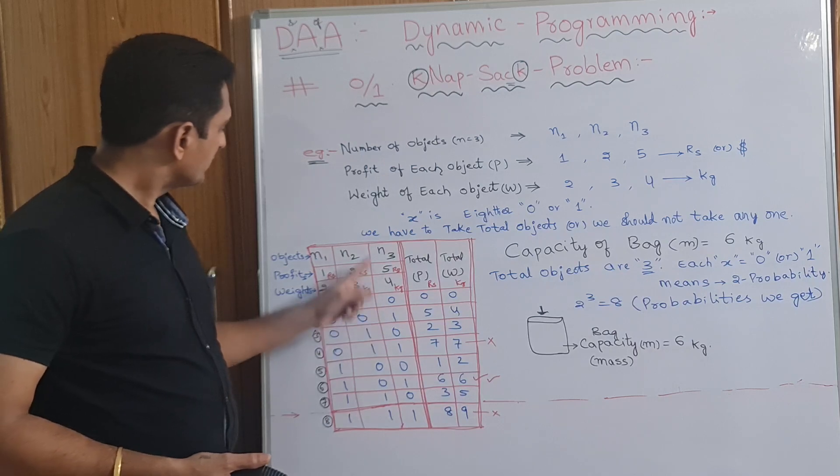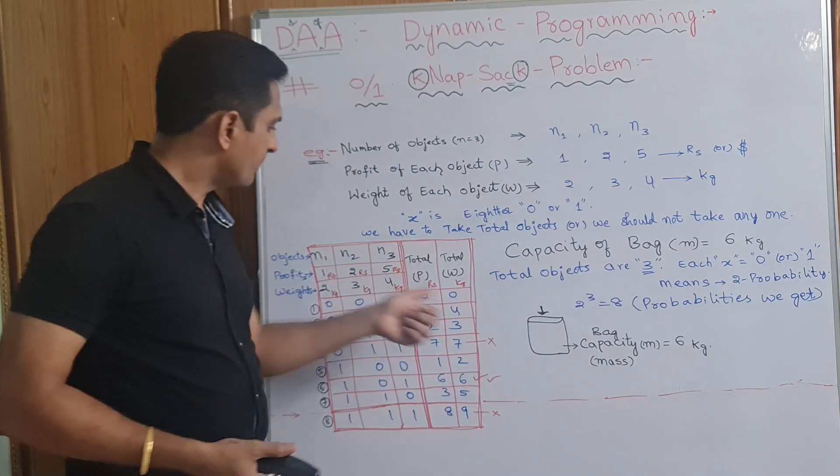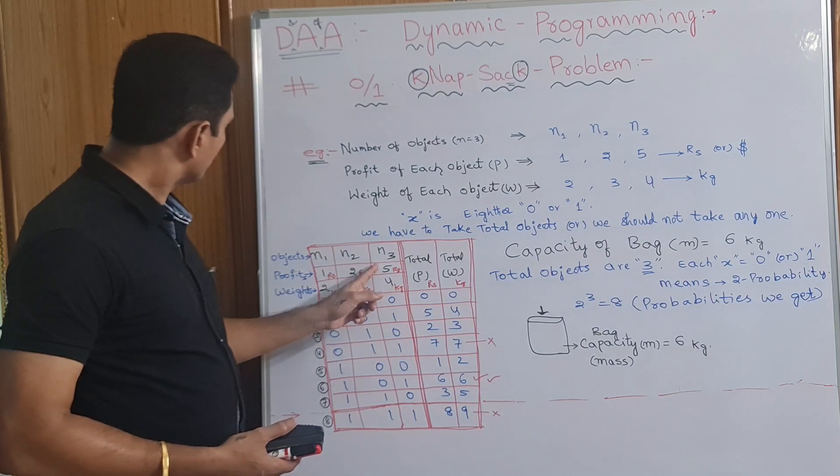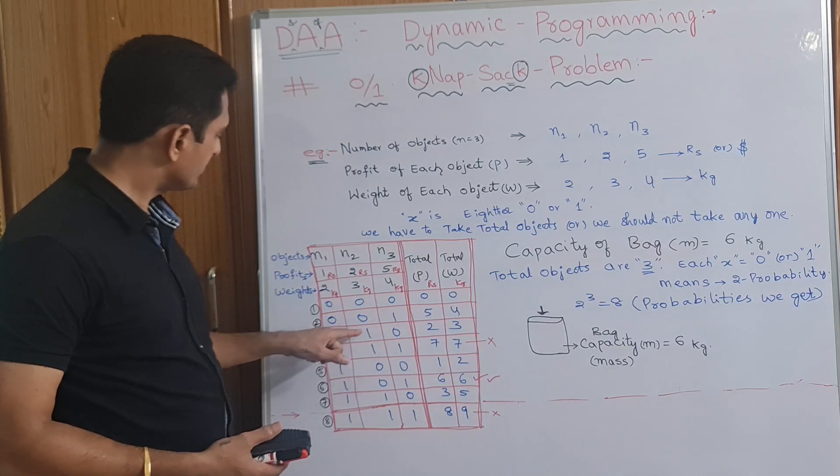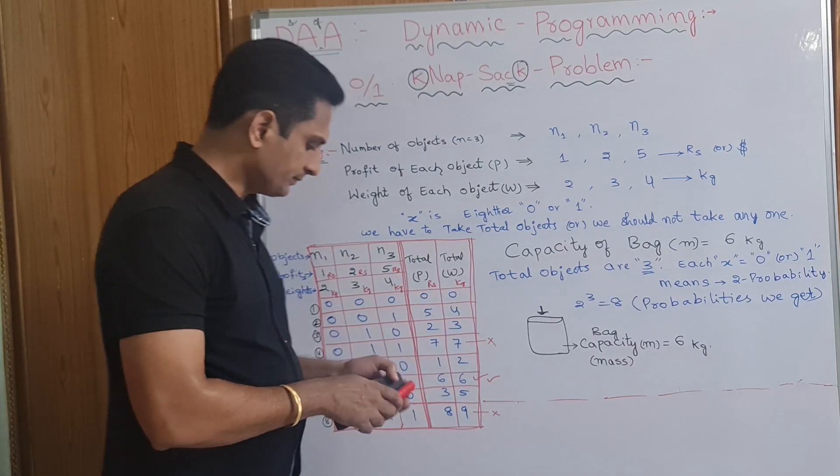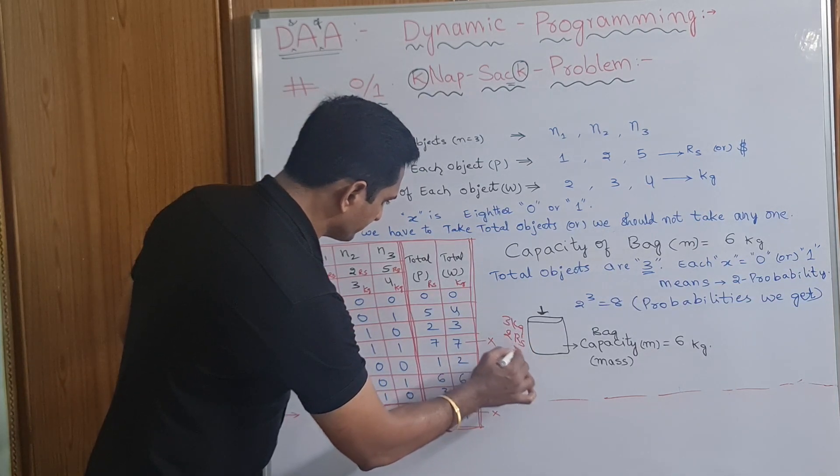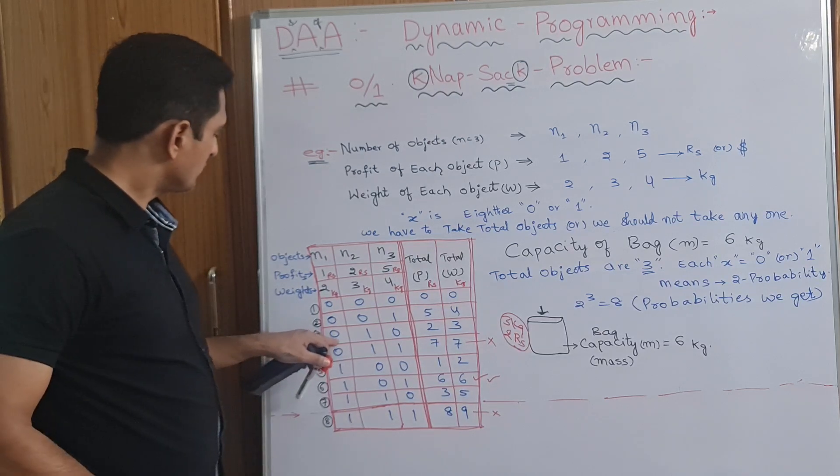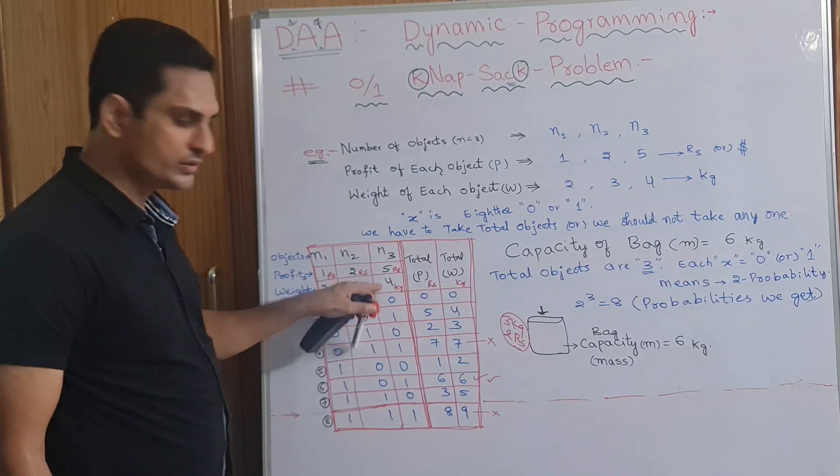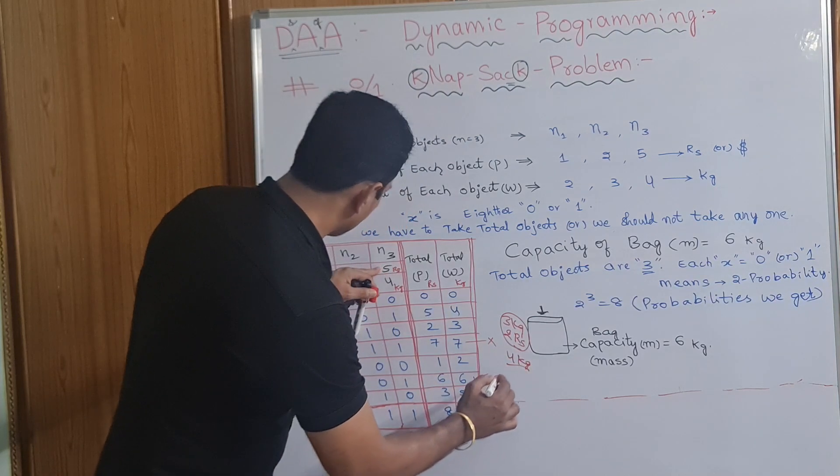If you have taken 001, this column you have taken. So, 2 rupees profit we will get and 3 kgs here. For example, you have taken this. 3 kgs of bag is filled and we will get 2 rupees. For example, you have taken this scenario, third scenario. 0, 1, 0. Means this one. 2 and 3. You have taken 001. Means this one. 5, 4. 4 kgs filled and we get 5 rupees profit.